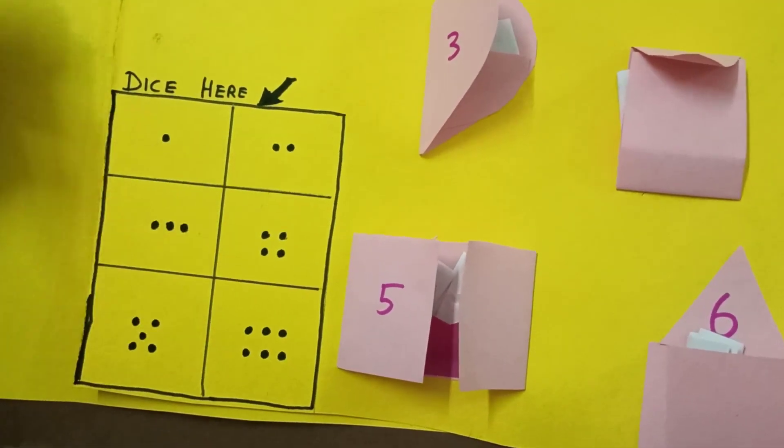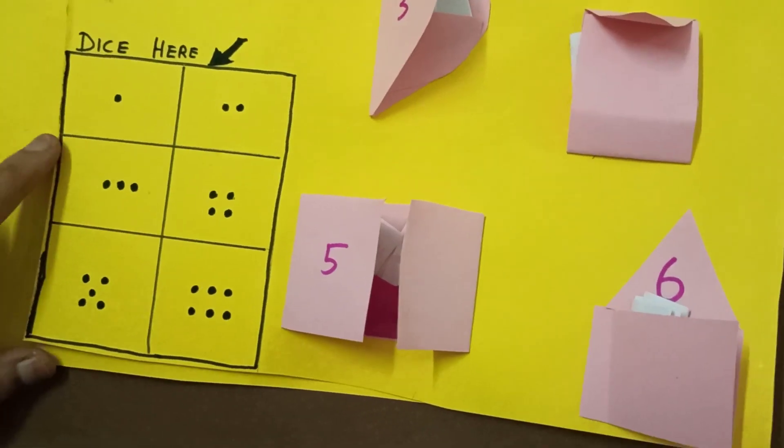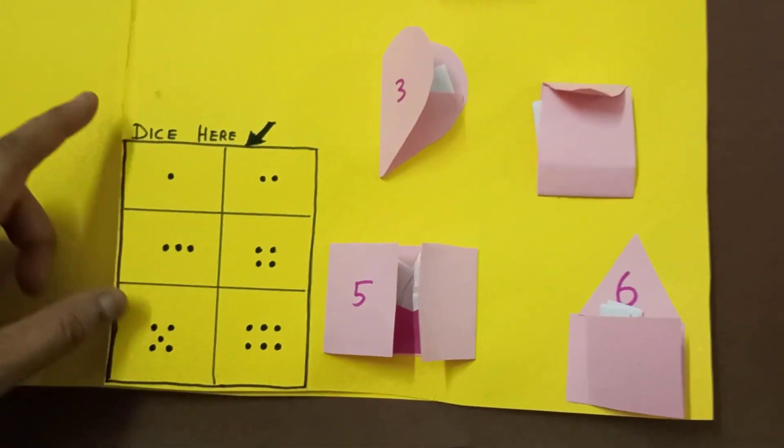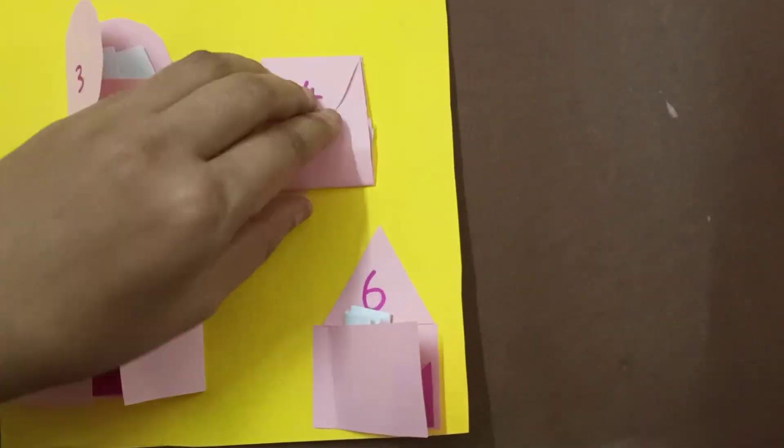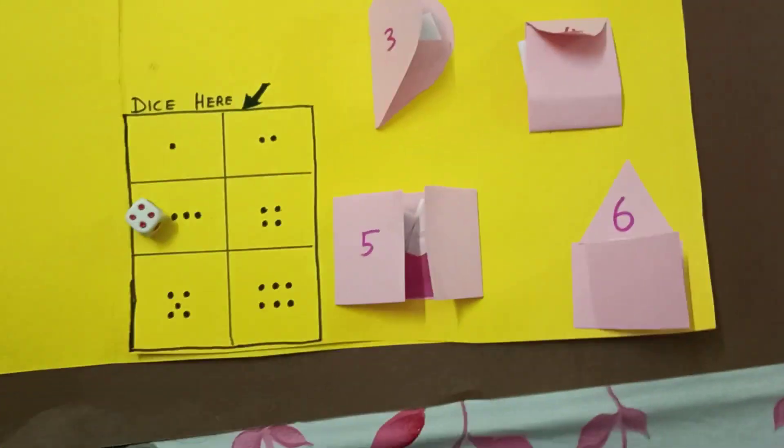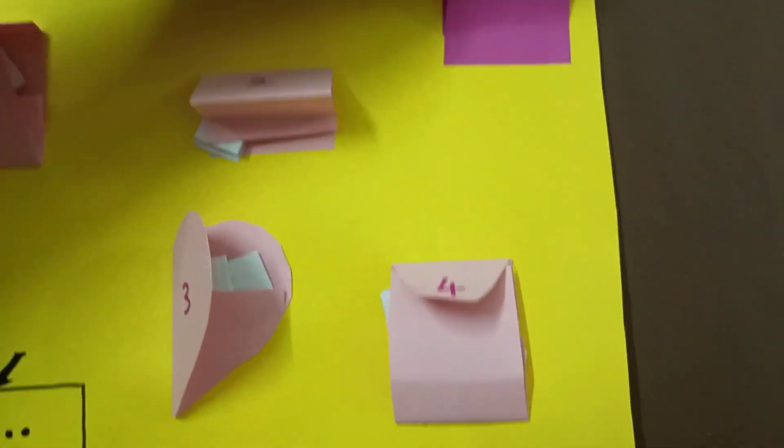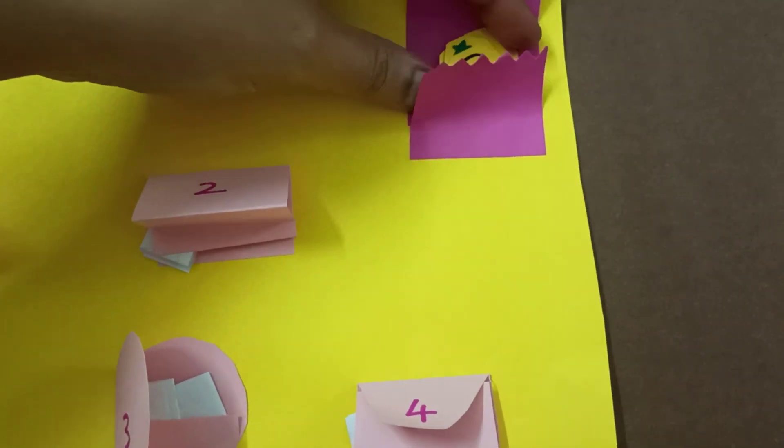If you have a dice then it is not a problem. If you don't have dice, just draw like this, crunch a paper and roll on it. So here is your question. I am going to play with my daughter. Here you can see at the top you can have a gift box which makes it interesting.